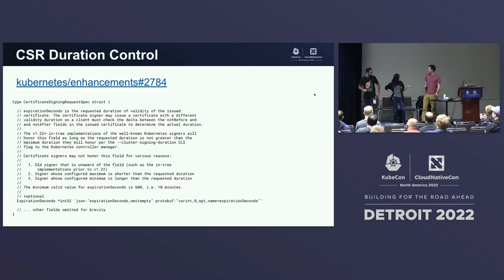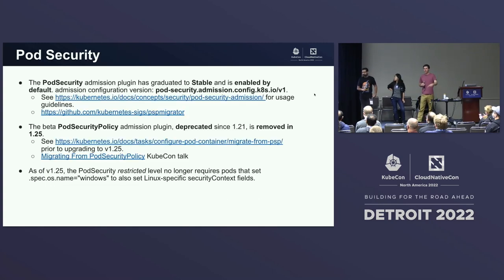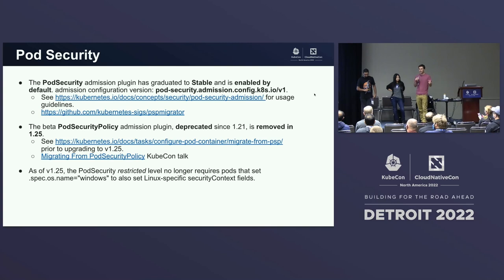I did a talk on migrating from pod security policy to pod security admission yesterday, so I recommend watching the replay. We also have guides published on how to do that migration, and there's a Kubernetes SIGs project called the PSP migrator which automates a bunch of the tasks in the migration workflow, like identifying mutating PSPs which can potentially cause problems when you disable them.